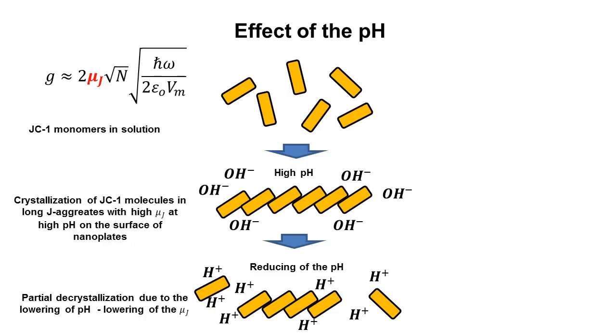Since both transparency dip and the Rabi splitting energy depend on the coupling strength, we explain the change by the change of the transition dipole moment of the J-band excitons. One of the possible explanations of this fact is a shift of the ionic balance of the solution, which affects the process of crystallization or aggregation of molecules. The presence of the excess amount of hydroxide anions may shift the ionic equilibrium, and it is possible that JC1 ions form some type of crystals or aggregates with hydroxide anions.